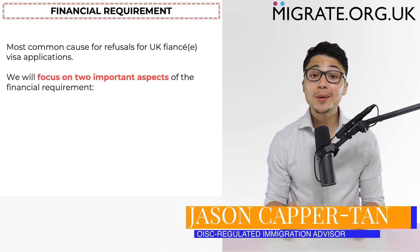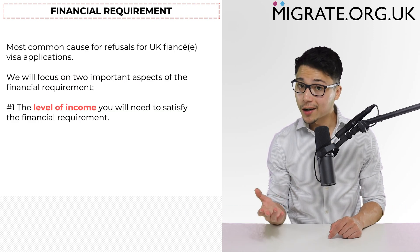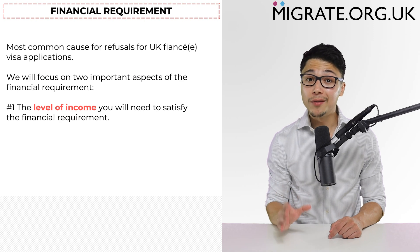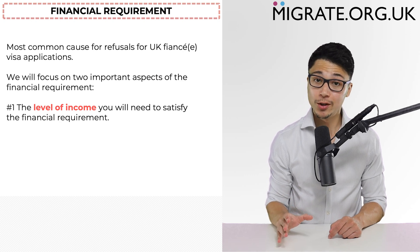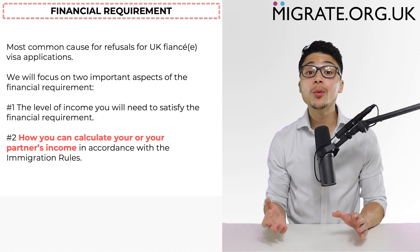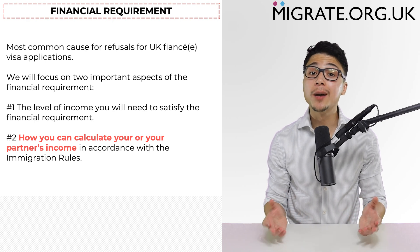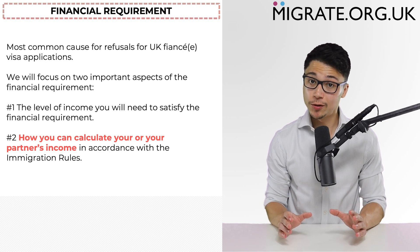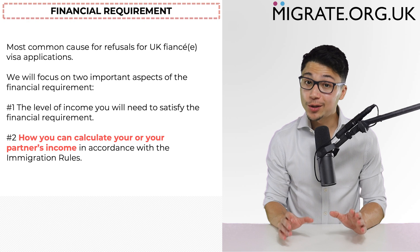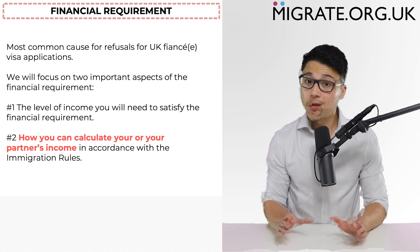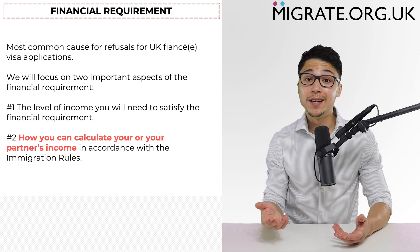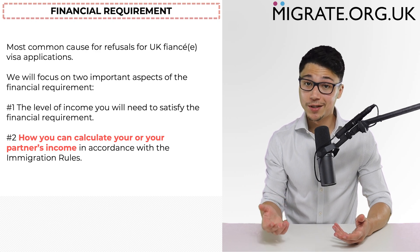In this video, we will focus on two important aspects of the financial requirement. One, the level of income that you will need to satisfy the financial requirement, and two, how you can calculate you or your partner's income in accordance with the immigration rules. The calculation of the income is particularly important, because the way in which your income is calculated is not always necessarily intuitive.